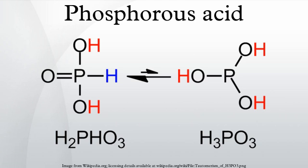Phosphorus acid is a moderately strong dibasic acid. It reacts with alkalis forming acid phosphites and normal phosphites. Thus, reaction with sodium hydroxide gives sodium dihydrogen phosphite and sodium hydrogen phosphite, but not trisodium phosphite, Na3PO3, as the third hydrogen is not acidic: H3PO3 + NaOH → NaH2PO3 + H2O; H3PO3 + 2 NaOH → Na2HPO3 + 2 H2O. Phosphorous acid is a powerful reducing agent.